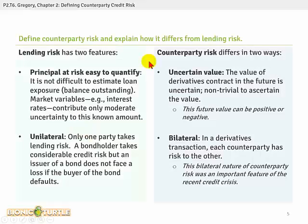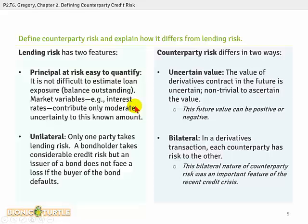The first learning outcome is a classic in the FRM: to explain the difference between counterparty risk and lending risk. With lending risk — a good association is to think about a bond or a loan — the principal at risk is usually easy to quantify. The exposure is typically the balance outstanding, and it's unilateral in the sense that it's the bondholder taking the risk, but not the issuer.